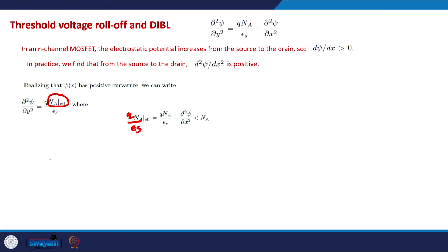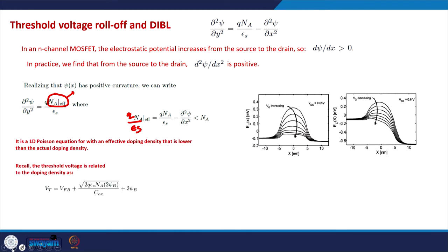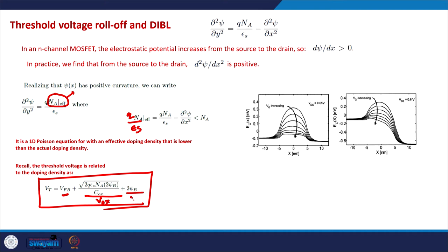It is important to consider how various device parameters change if instead of N_A we replace it by N_A_effective. The threshold voltage is given by a formula combining the flat band voltage, the voltage drop across the oxide (V_ox), and the voltage drop across the semiconductor. At threshold, the voltage drop across the semiconductor is 2 psi_B, and the voltage drop across the oxide is determined by the depletion charge divided by the oxide capacitance. The threshold voltage depends on the square root of the doping of the semiconductor.